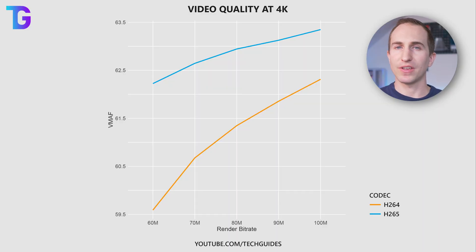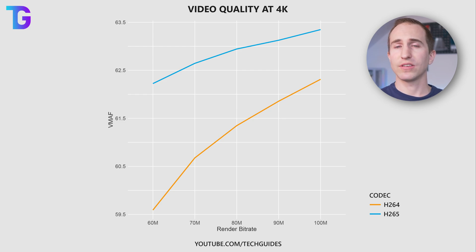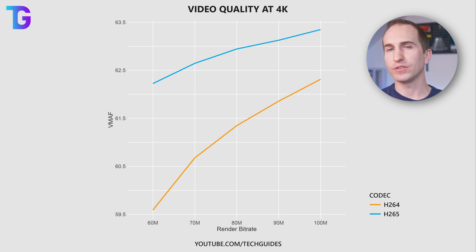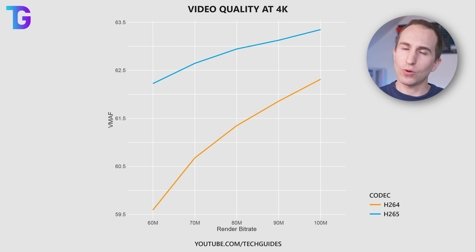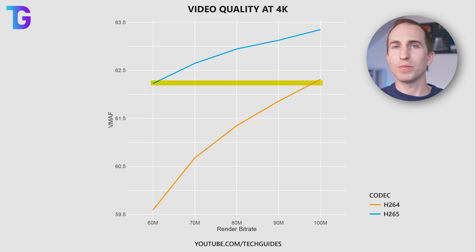On this graph, the orange line represents rendering using H.264 and the blue line represents H.265. The different rendering bitrates are on the horizontal axis and the corresponding visual quality on the vertical axis, with a higher value representing better visual quality. As expected at 4K, H.265 always produces higher visual quality compared to H.264 at the same bitrate. You can achieve the exact same visual quality on YouTube with H.265 when decreasing your bitrate by 40 Mbps. If you're rendering 4K videos for YouTube, you should definitely always stick to H.265, both for the better visual quality and potentially lower render times.